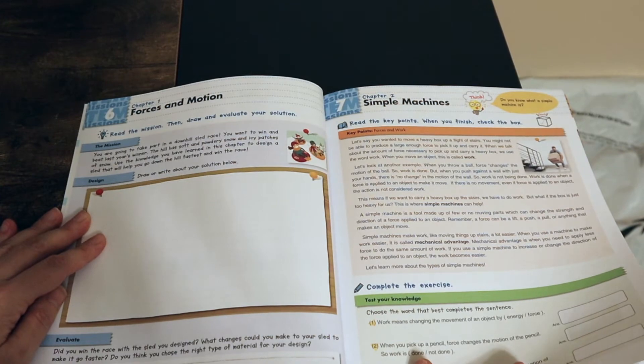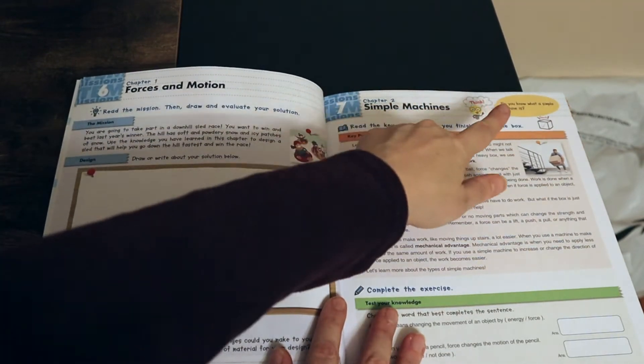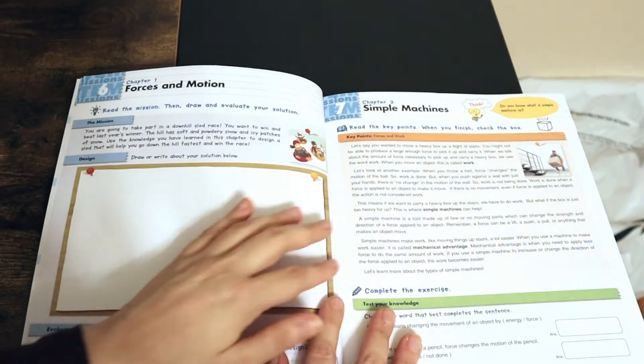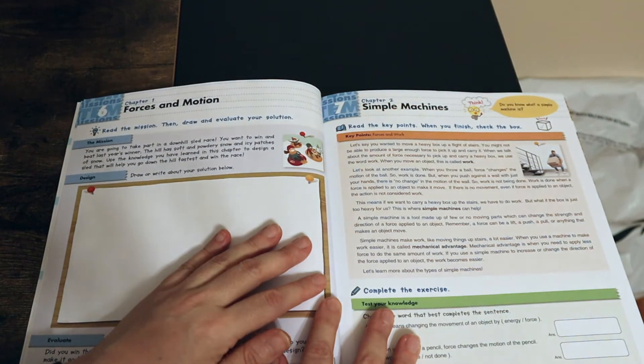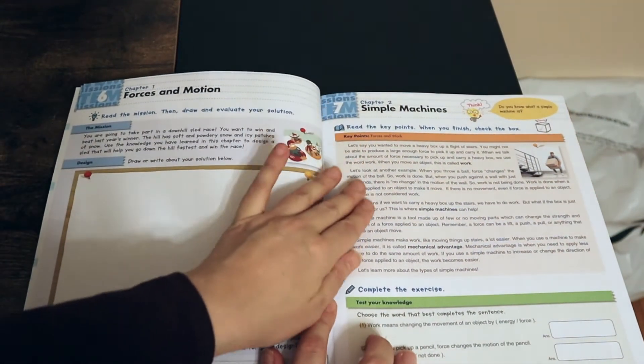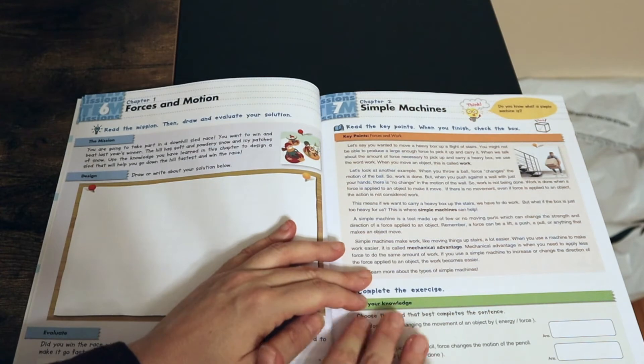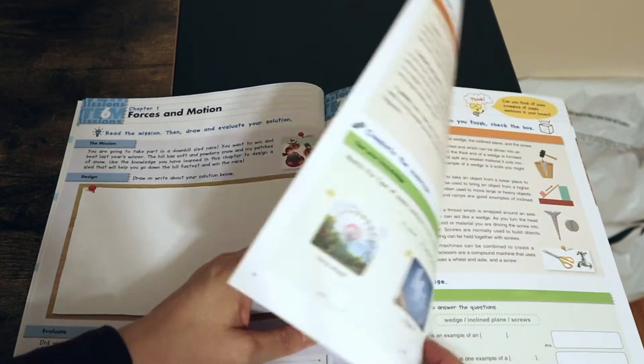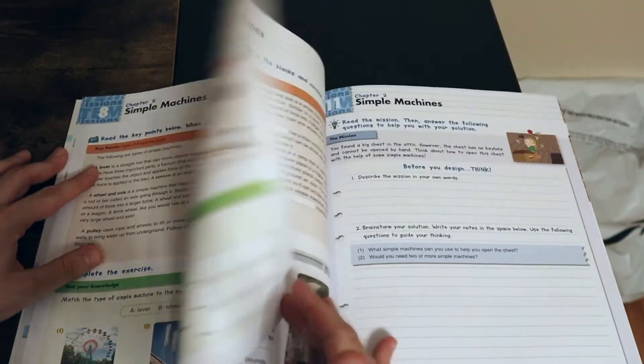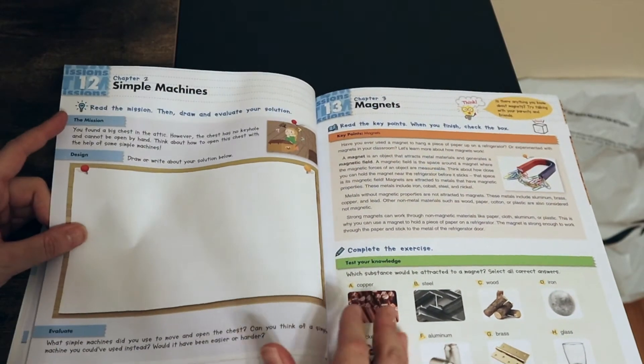And then you have Chapter 2, which goes into simple machines. Again, they have that little question in there: do you know what a simple machine is? They'll answer it in here and have some questions that they have to fill in the answer for. It goes through several pages as well.